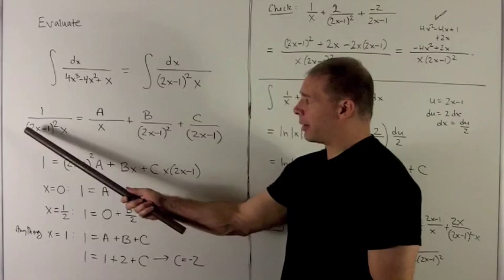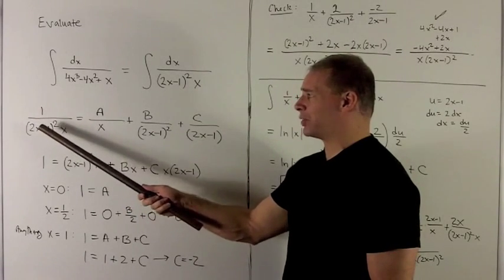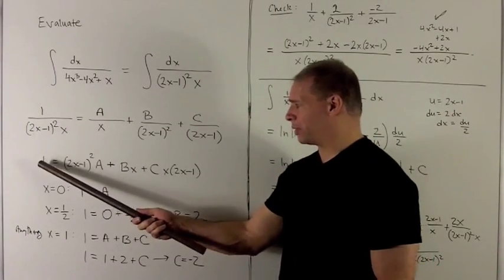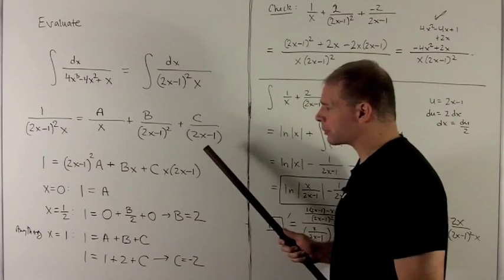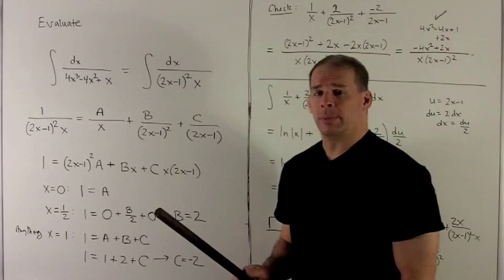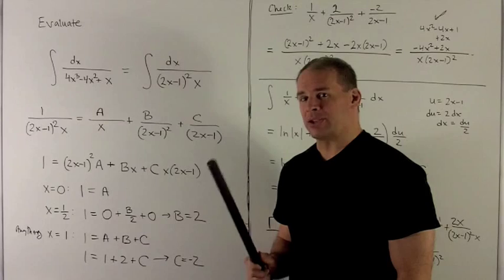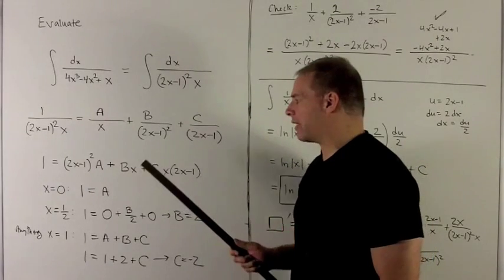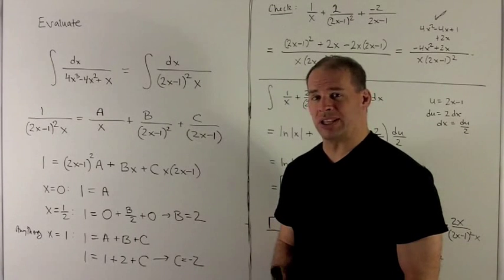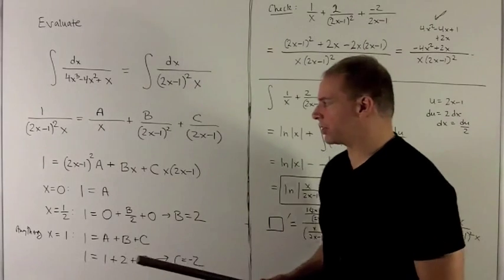As usual I'm going to clear the denominators out so we're going to multiply everything on both sides by 2x minus 1 squared times x. When I do that I'm going to be reduced to this equation. For this equation we're going to target the roots. What's going to happen is because I have a power the roots won't be enough, but that's okay because what will happen is I'll solve for enough of the constants that only have one equation left and I can get that by putting in any point I want.